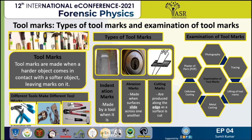After that, conclusions can be made in three ways: positive ID, negative ID, or inconclusive. Positive ID means class characteristics and individual characteristics match. Negative ID means class characteristics do not match. Inconclusive means class characteristics match but there are insufficient matches in individual characteristics.